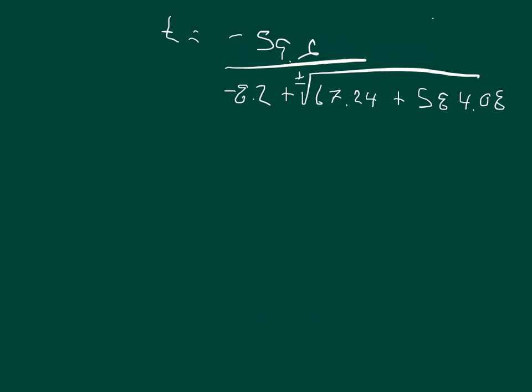So here's what we're going to do, the square root of this is going to be, so we'll have that the time is equal to negative 59.6 divided by negative 8.2 plus or minus, and that'll be 25.52097.